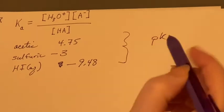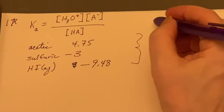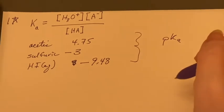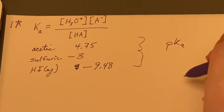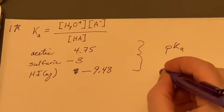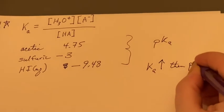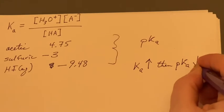But the idea is that as Ka's get larger, pKa's go down, become smaller numbers, even going negative. As Ka goes up, then pKa goes down.